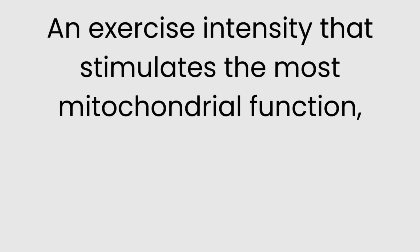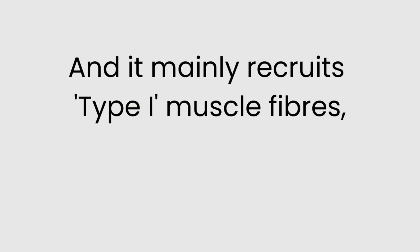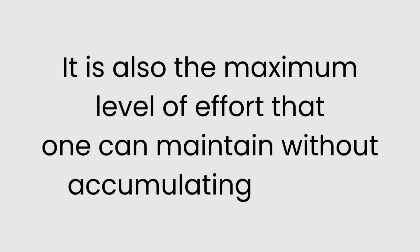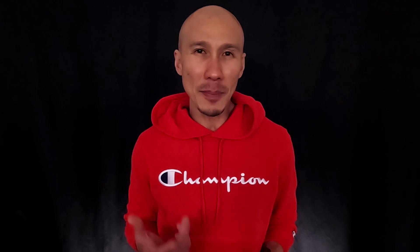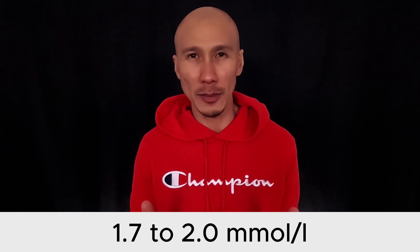Before we find out how that compares with my blood lactate levels during the test, let's first define zone 2. The best definition I found defines zone 2 as an exercise intensity that stimulates the most mitochondrial function, the most fat oxidation, and the most lactate clearance, and it mainly recruits type 1 muscle fibers, also known as slow twitch fibers. It is also the maximum level of effort that one can maintain without accumulating lactate — lactate is still produced, but at this effort level, the clearance rate of lactate is matched with the production rate, resulting in no buildup. The maximum blood lactate concentration before lactate starts to build up is about 2 millimoles per liter, with the zone 2 sweet spot sitting somewhere between 1.7 to 2 millimoles per liter.